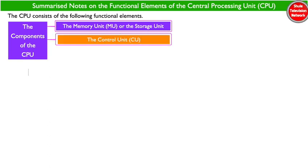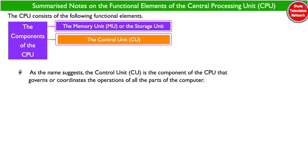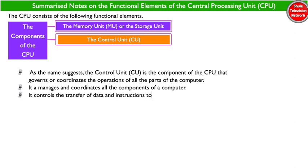As the name suggests, the control unit is the component of the CPU that governs or coordinates the operations of all the parts of the computer. It manages and coordinates all the components of the computer, and controls the transfer of data and instructions to and from the computer components.